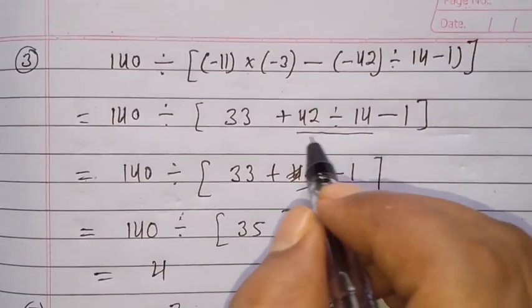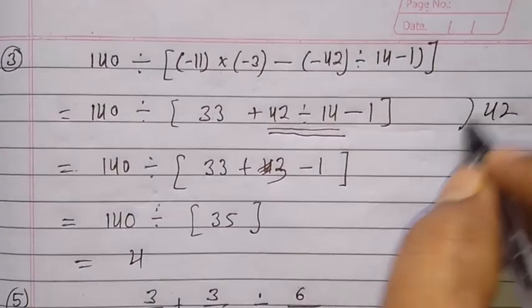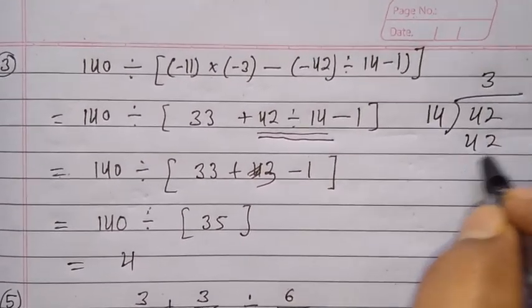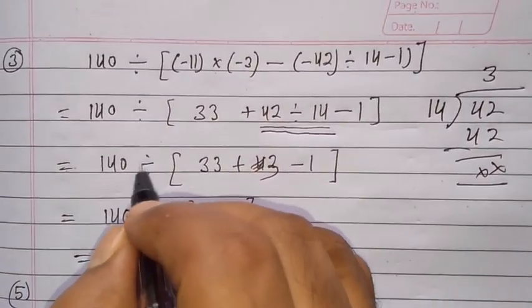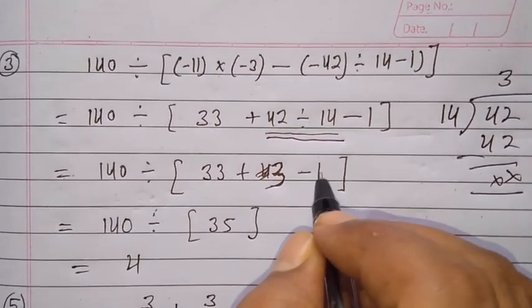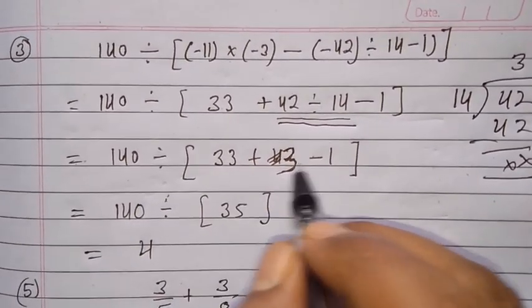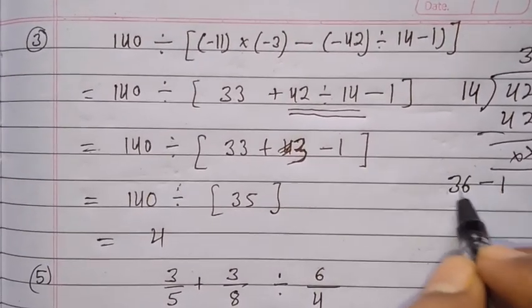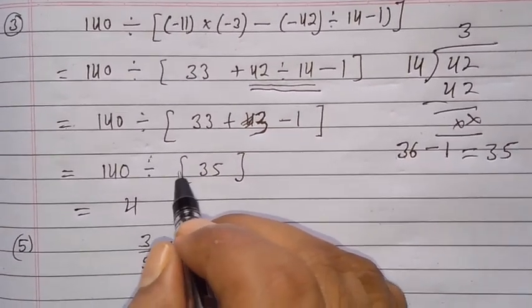Now we solve the division part: 42 divided by 14. 14 goes into 42 three times, so that cancels out to give 3. So we have 140 divided by [33 plus 3 minus 1]. Solving inside the bracket: 33 + 3 = 36, and 36 minus 1 = 35.